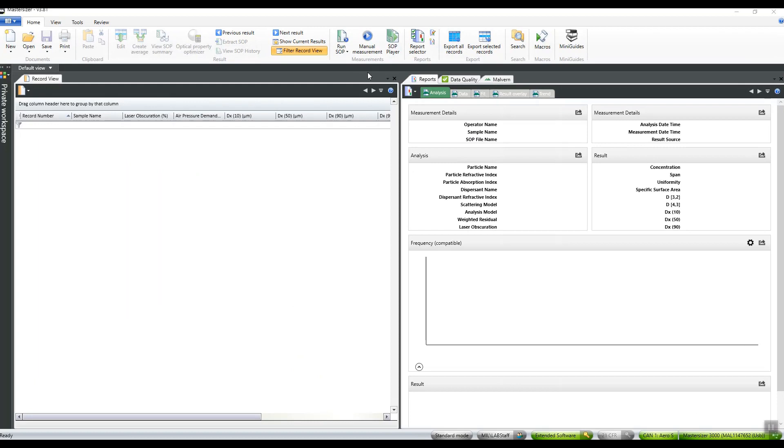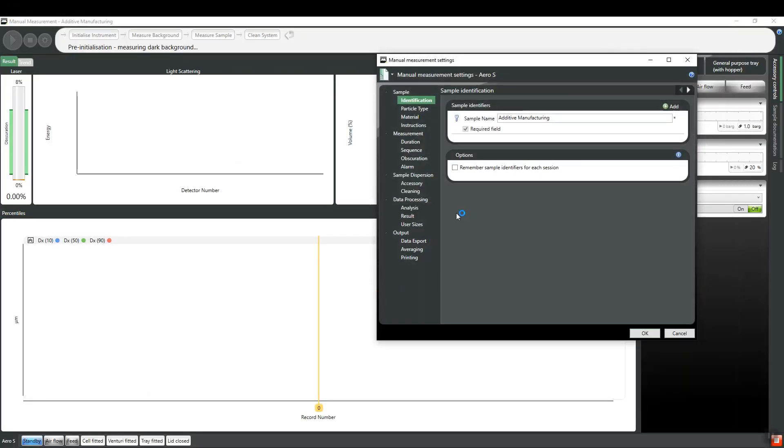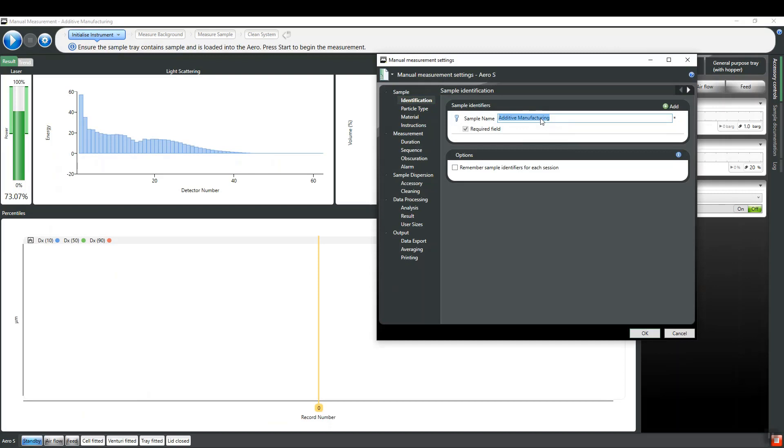We can then proceed to set up our measurement using either a manually controlled measurement or a more automated SOP. Here we are using a manual measurement, which allows us to define our measurement settings before initialization by proceeding through the settings manager.